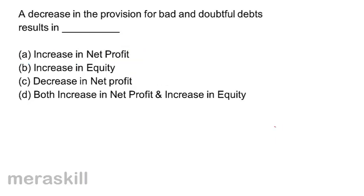A decrease in the provision for bad and doubtful debts results in: A, increase in net profit; B, increase in equity; C, decrease in net profit; D, both increase in net profit and increase in equity. If there is a decrease in provision for bad and doubtful debts, it would result in increase in profit as well as increase in equity. Correct answer should be D.